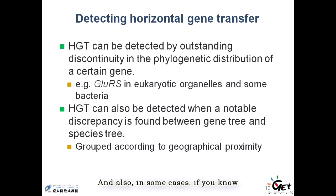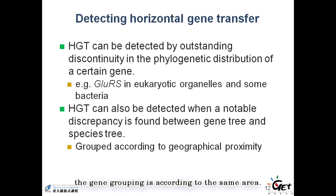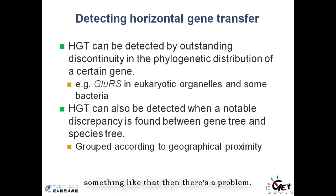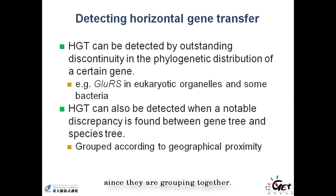Also, in some cases, if in a particular phylogeny the gene grouping corresponds to the same geographic area — for example, genes isolated from Japan are grouped together regardless of whether they come from fungi or bacteria — then there may be a problem. There might be some HGT happening in that area, since they are clustering together geographically.